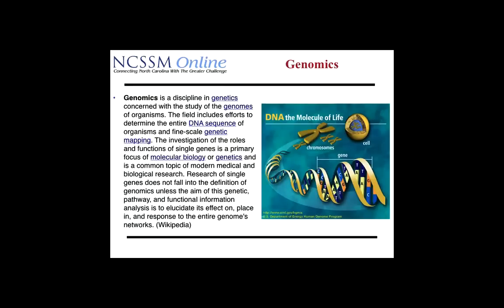The primary focus area for computational biology and bioinformatics is genomics — a discipline in genetics concerned with the study of the genomes of organisms. The genome is the entire set of instructions in an organism that decide what its characteristics are going to be. You have what's known as the genotype — that list of instructions, the A's, C's, T's, and G's that make up your DNA.